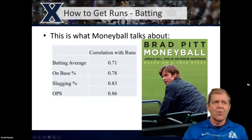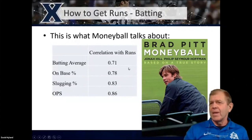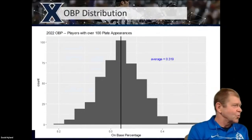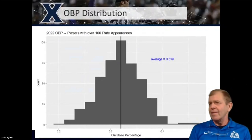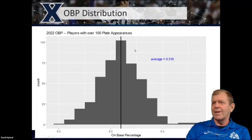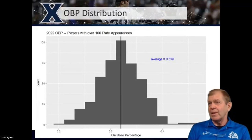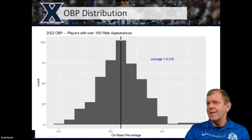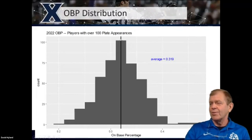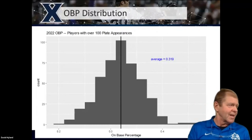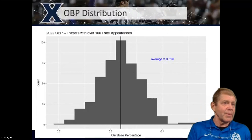We're going to start with on base percentage, just to keep it simple — highly correlated with runs. Whenever we start to play with data, one of the things we want to do is graph it. Here is the 2022 season — I took all the players with over 100 plate appearances and just plotted their on base percentage. We see the average is about .319, the median is very close to the mean, it looks somewhat normal, which is going to allow us to use these confidence intervals, making some normality assumptions.